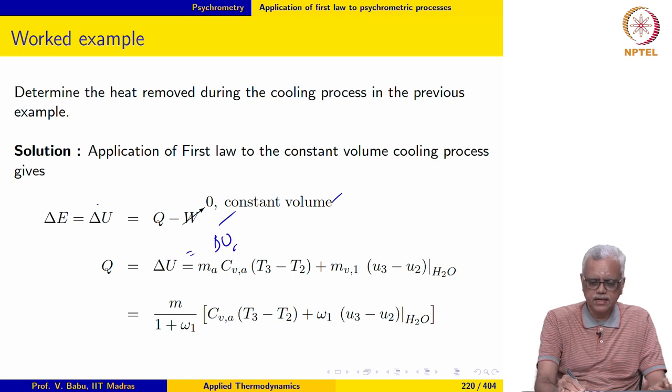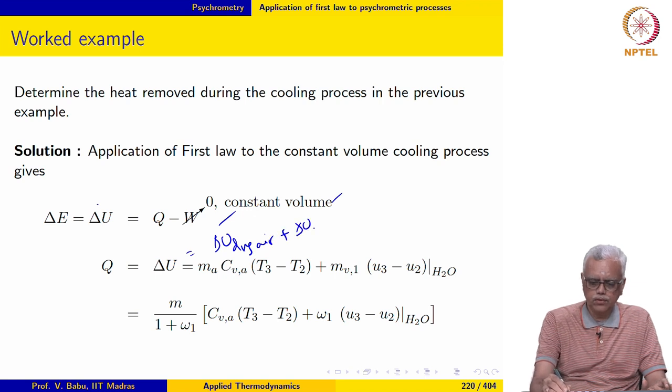Since it is a constant volume process, W is zero — no displacement work and no other forms of work. Therefore Q equals delta U, and delta U consists of delta U of dry air plus delta U of the water vapour.